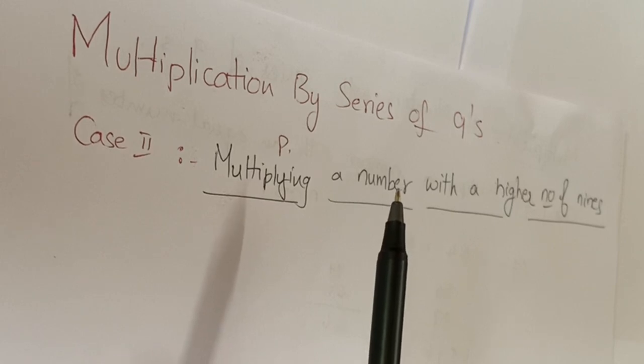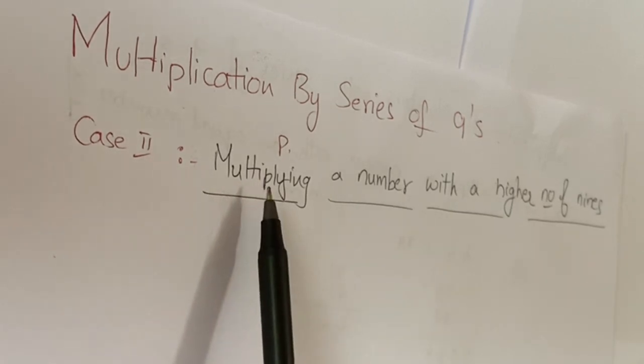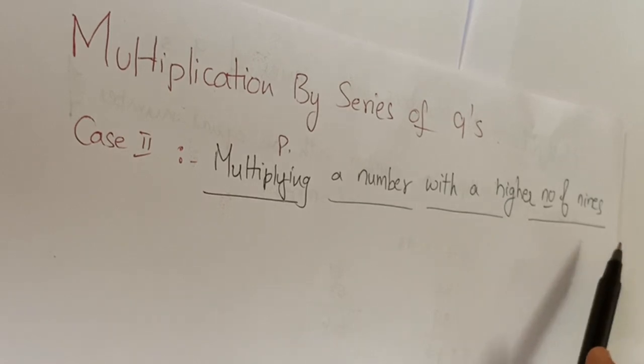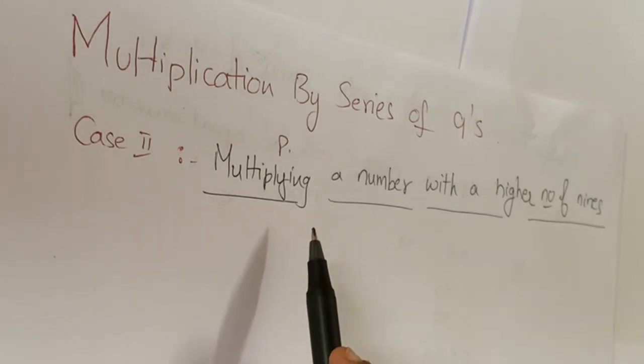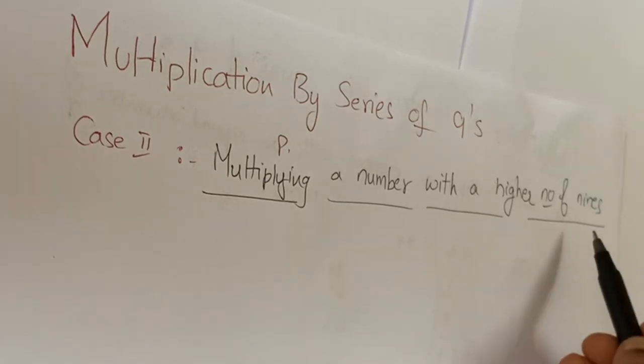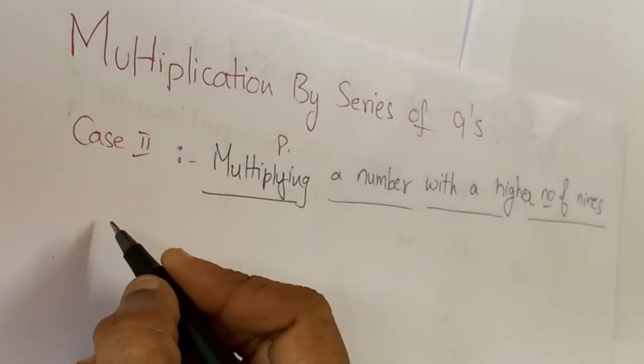Today we learn a second case: multiplying a number with a higher number of nines. Here the multiplicand contains less number of digits when compared to the multiplier. Let me show you an example.